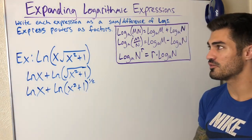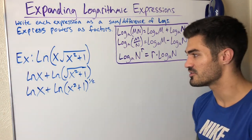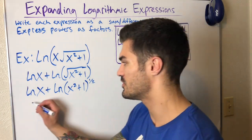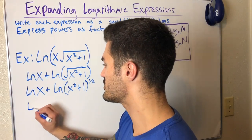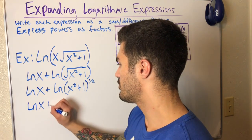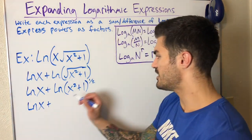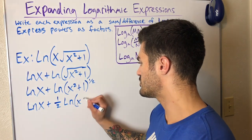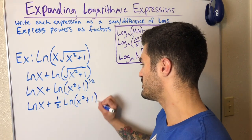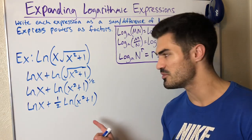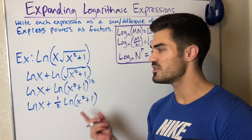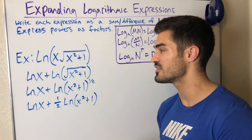Now my one half can come out in front and be expressed as a factor. I can have one half out here being multiplied to that ln of x squared plus one. So my final expanded logarithmic expression is ln x plus one half ln x squared plus one. And again we have addition in here. We cannot break this up. That's a big mistake. People will break that up. You can't do it. Only multiplication, division, and power. So this is the final expanded form.